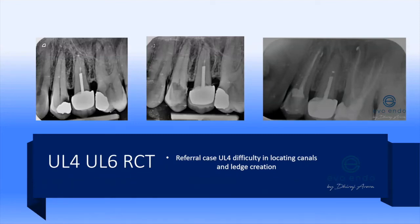Here are a couple of simple cases showing warm vertical condensation where you're able to fill apical anatomy fairly nicely and get decent healing results. In one case I saw the patient again subsequently — the tooth was taken out because it had a vertical root fracture, of which the J-shaped lesion is fairly characteristic. This was actually a referral case where the referring dentist had started to go askew with the access cavity preparation.